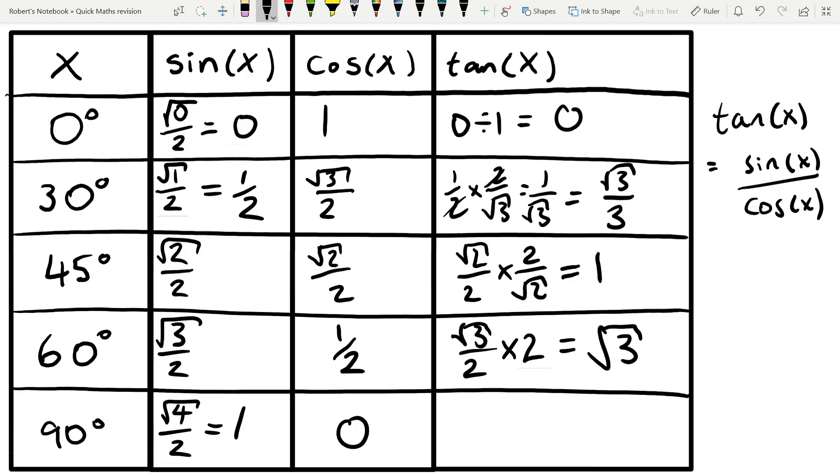And finally, we have 1 divided by 0, which means that we can't divide by 0. So the answer to tan of 90 is that it is undefined.